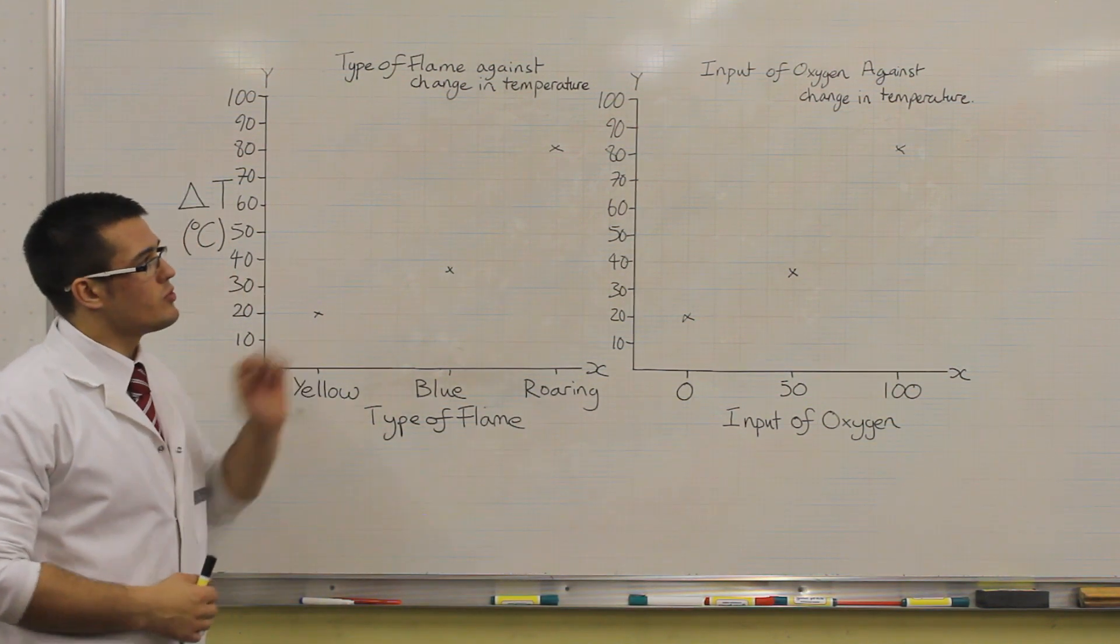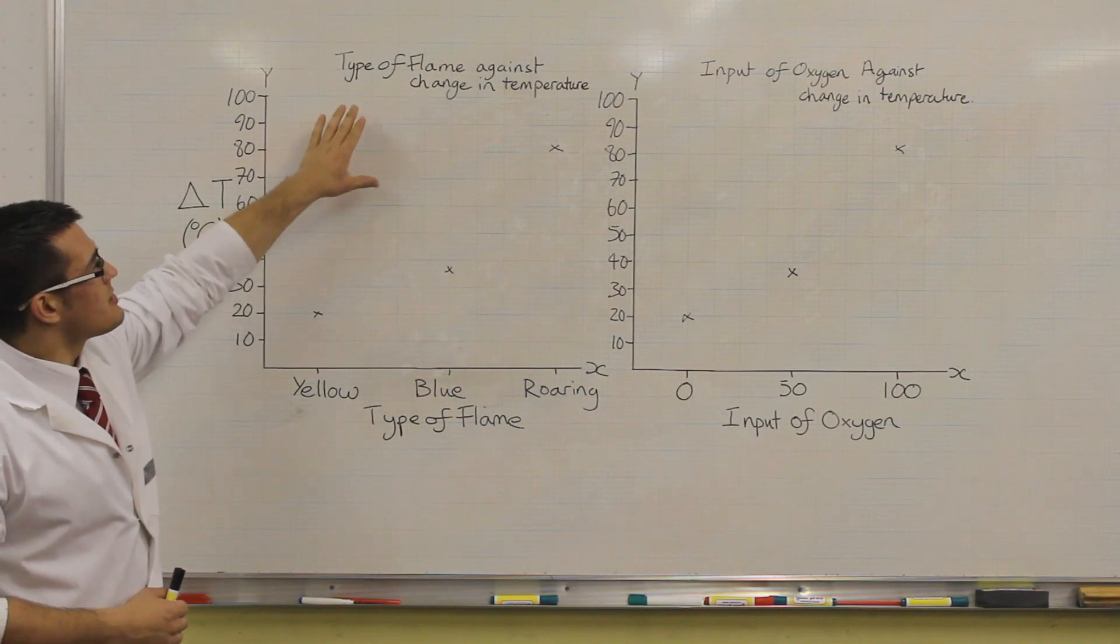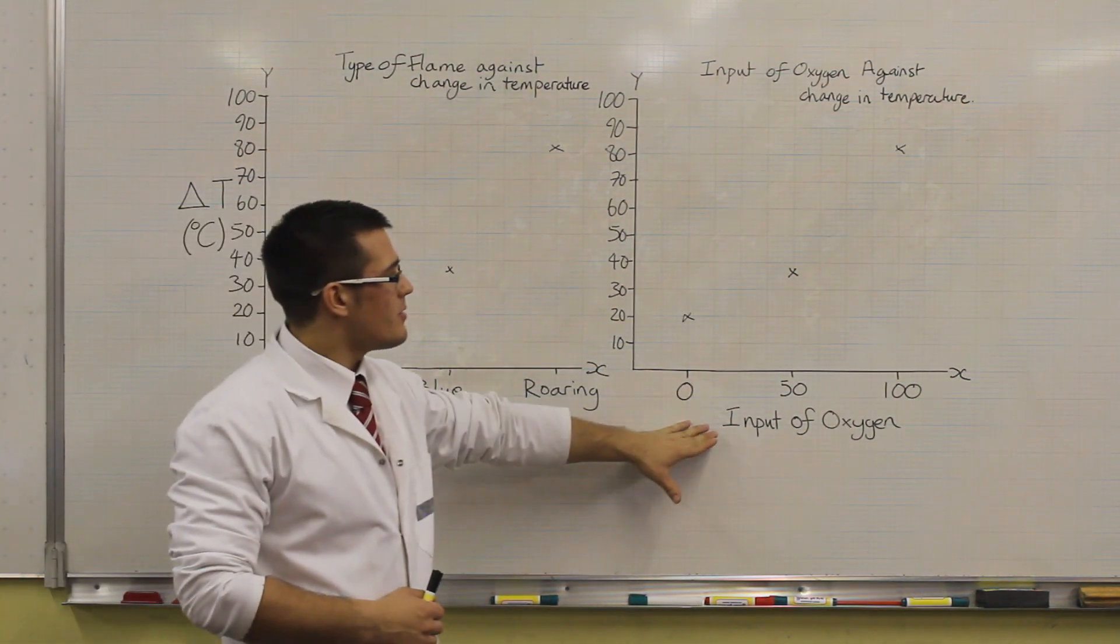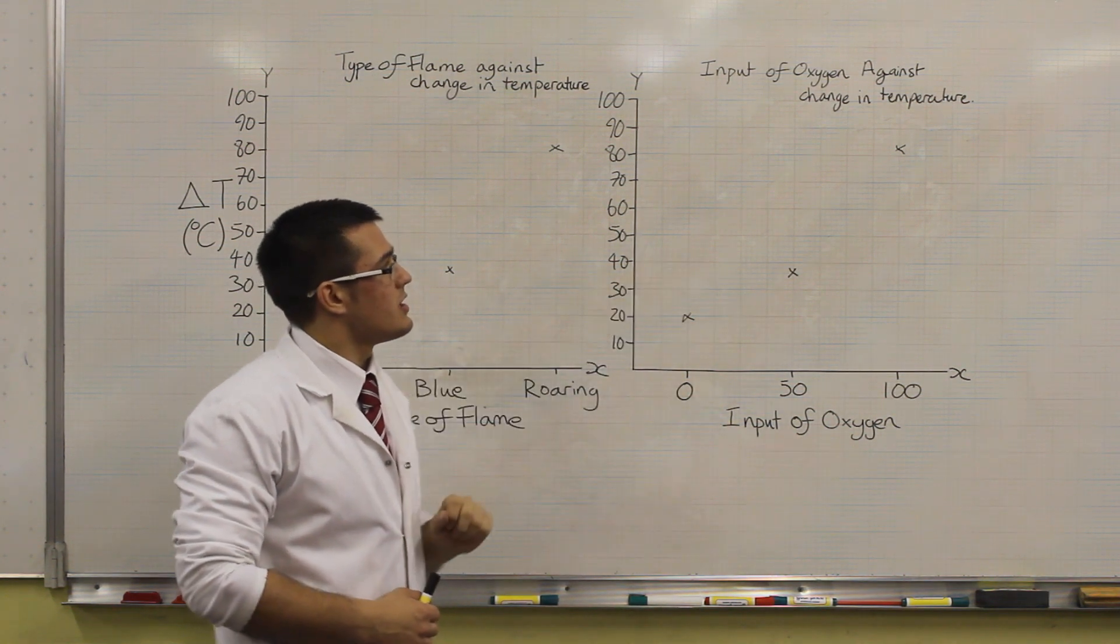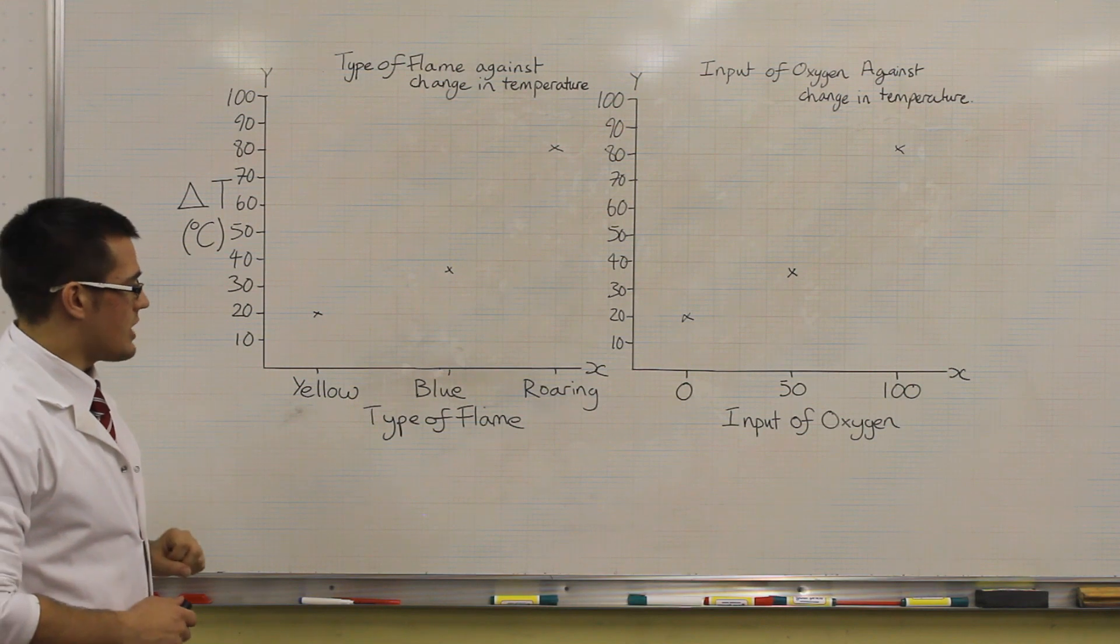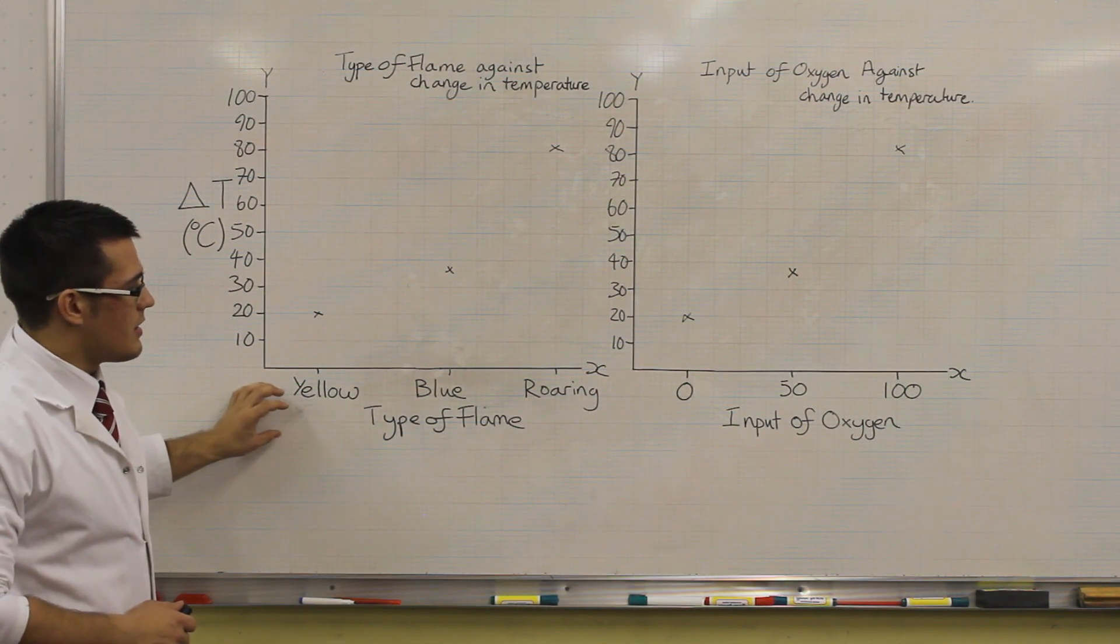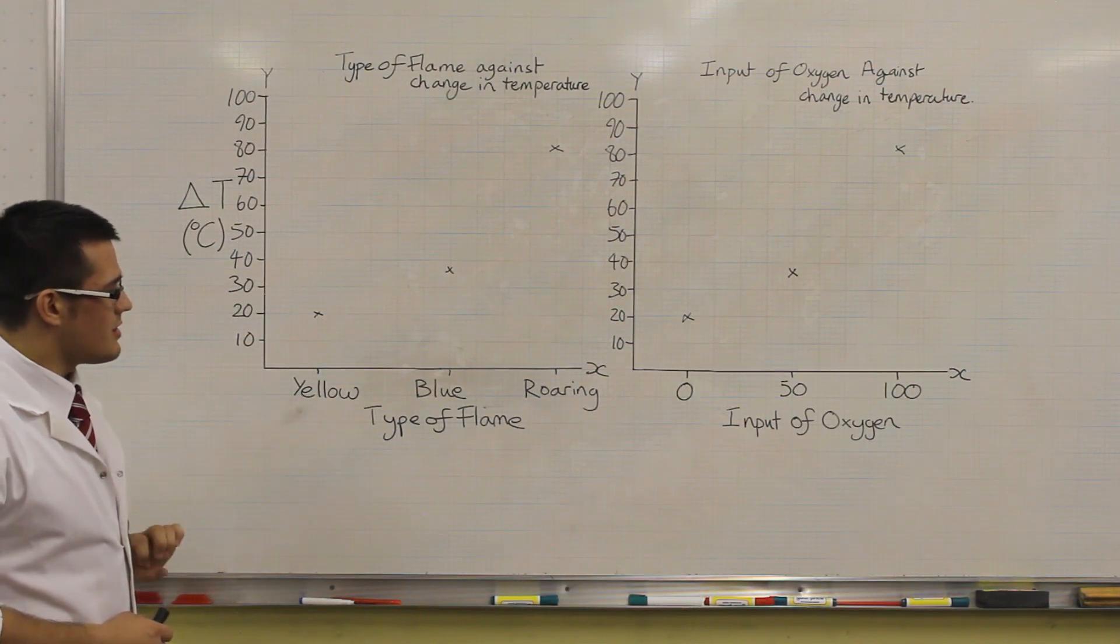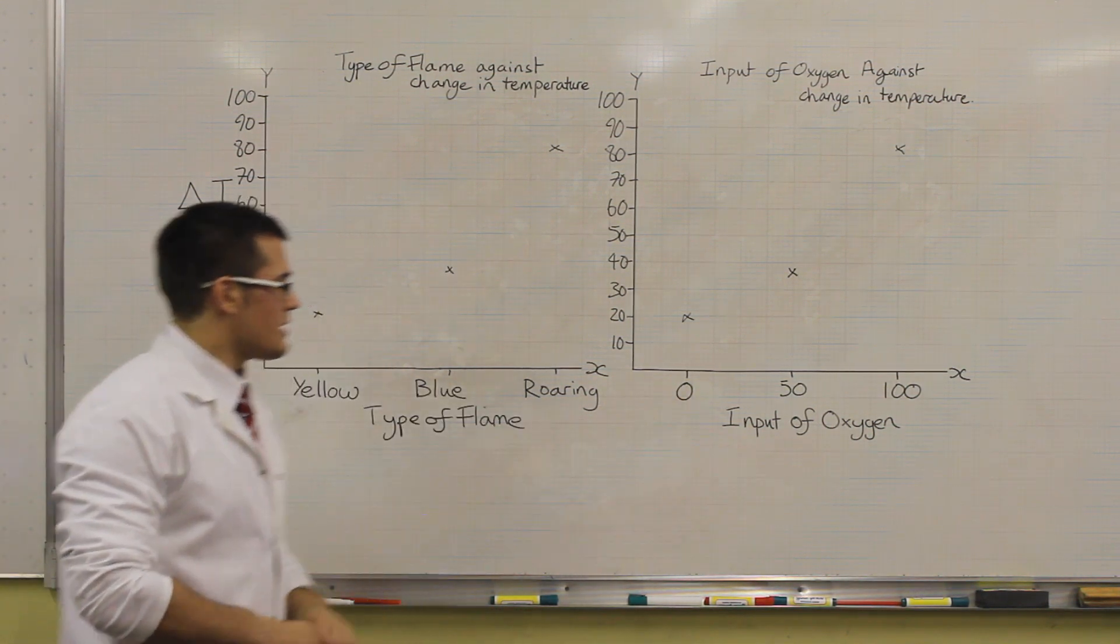We have two graphs. The first is the type of flame against the change in temperature, and the second is the input of oxygen against the change in temperature. These are the same graphs. The only thing we've changed is we've changed our independent variable, but we've changed it in terms of what we call discontinuous data and continuous data.